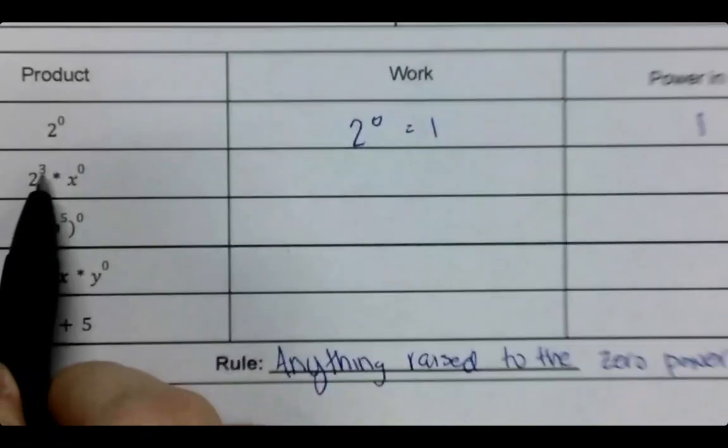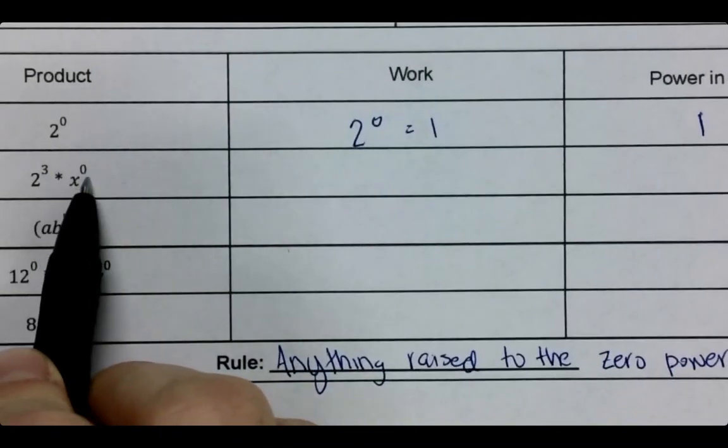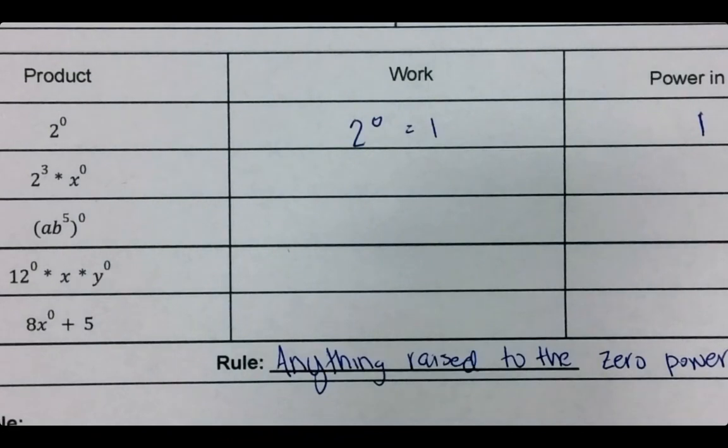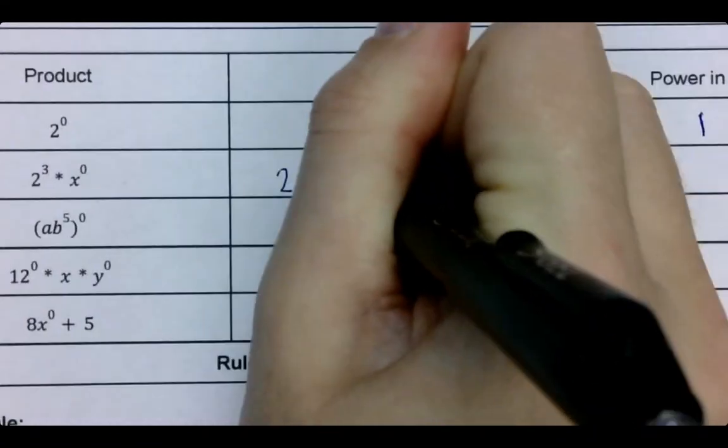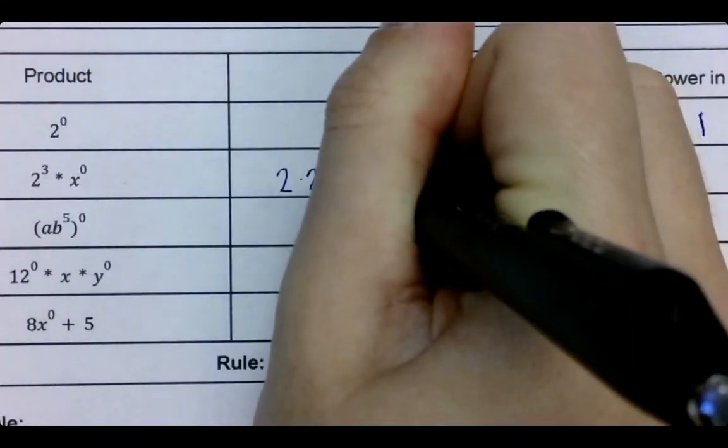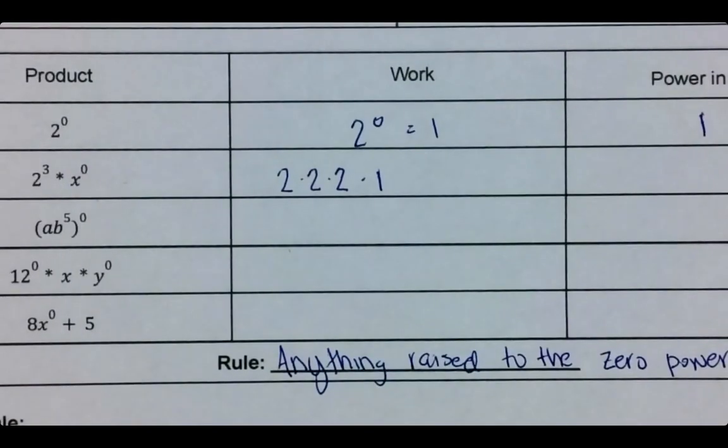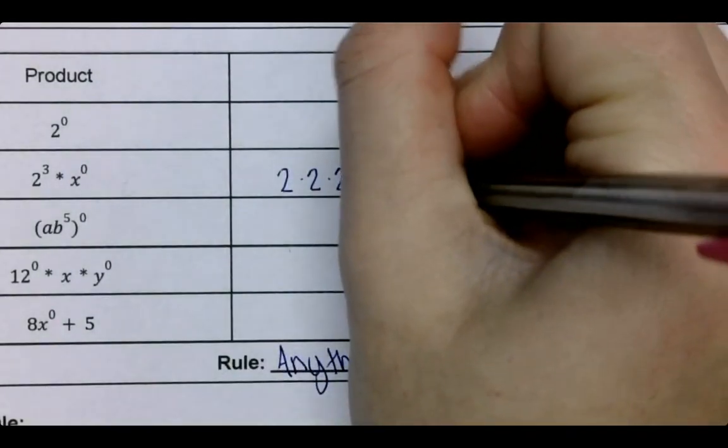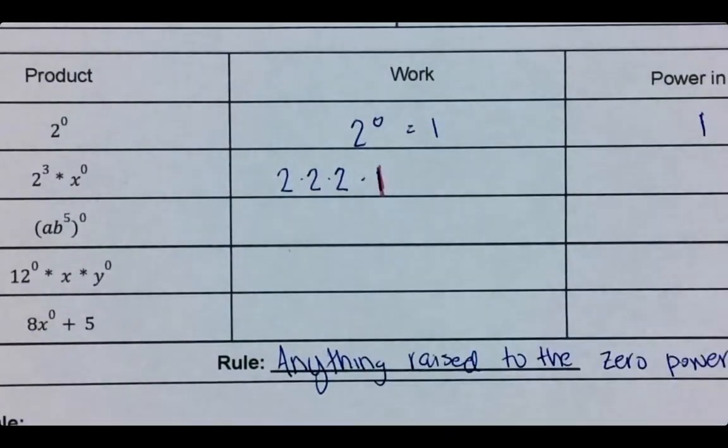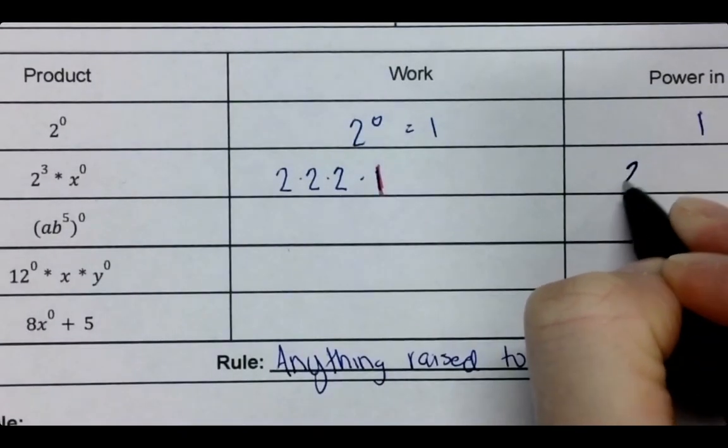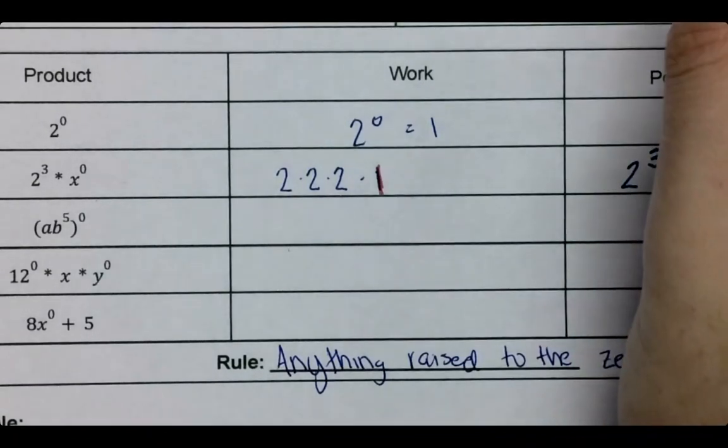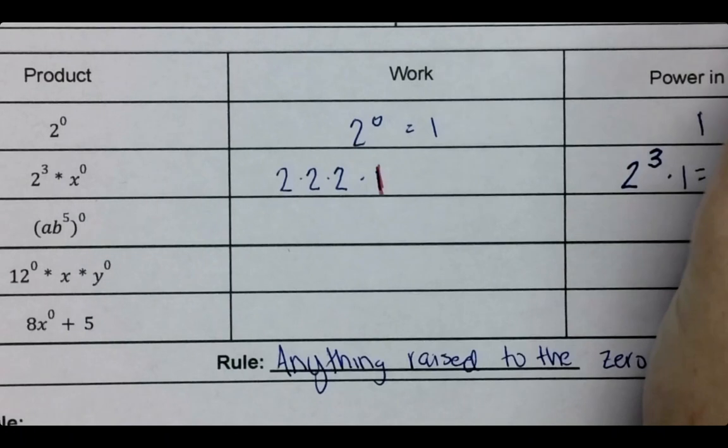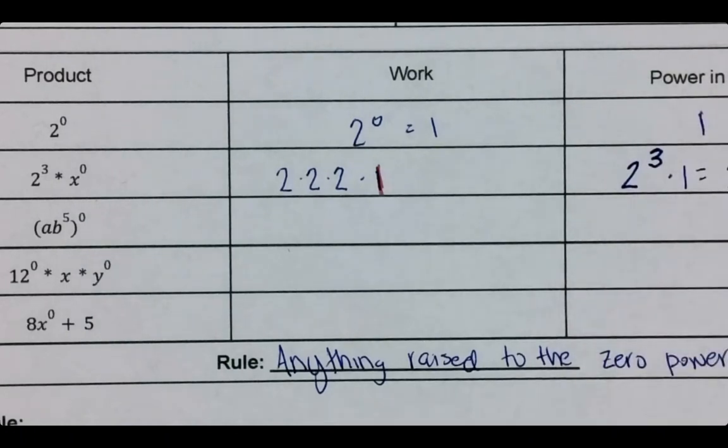This one is 2 to the third times x to the zero power. Well, 2 to the third would be 2 times 2 times 2 times 2. And then x to the zero power would be one. Notice how those are two different exponents, right? So it looks a little bit different. 2 to the third power. And then we just would times it by one, which would give us just 2 to the third power.